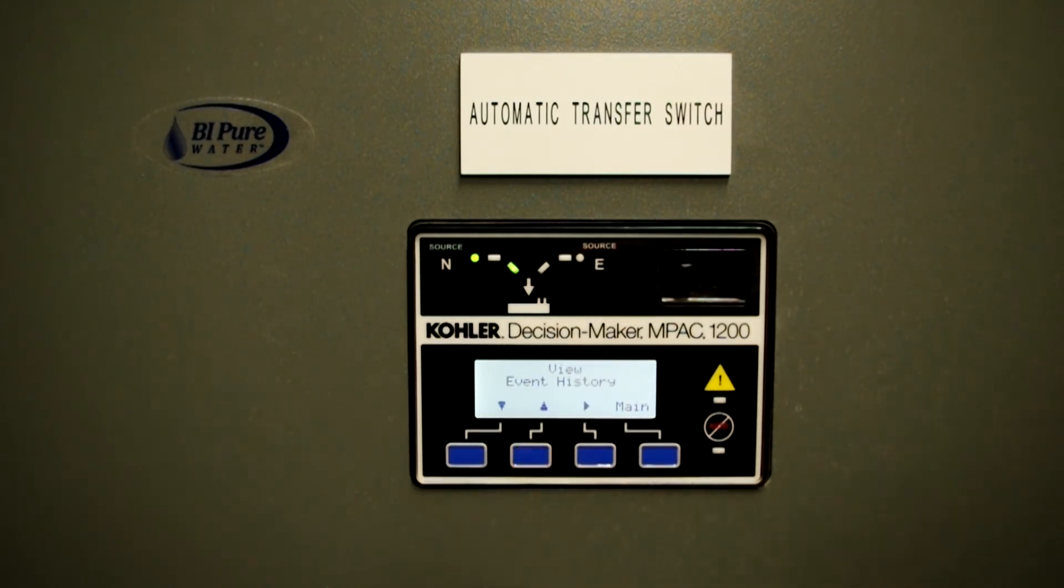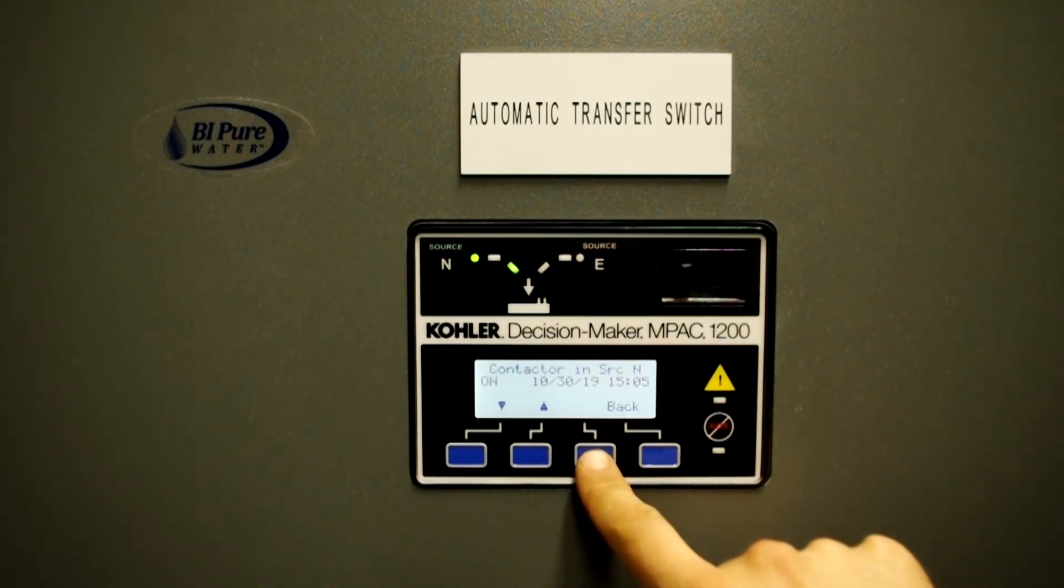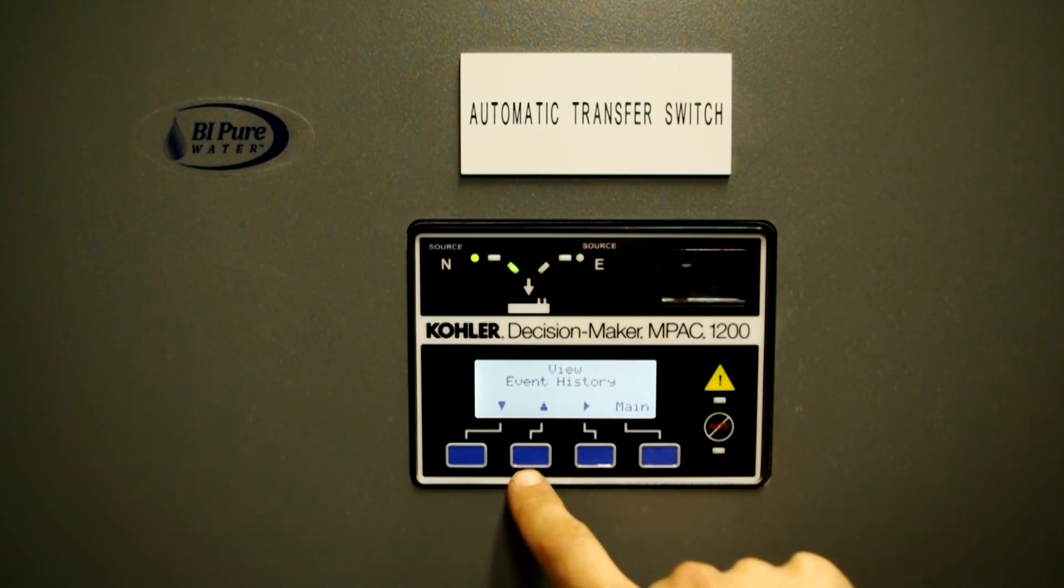So when you go to view, you can check event histories. You can also check whether the contactor is in normal or emergency. And that is it.